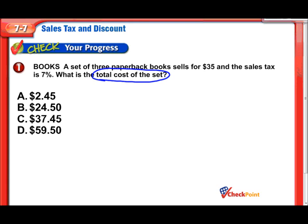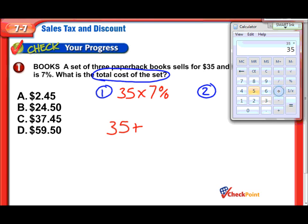There are two ways to go about this. The first one is to take the price and multiply it by that 7%. What we're going to do is add that tax to the original price to figure out the total cost of the set. Let me bring up a calculator. So, we take the $35 and multiply it by the 7%. That's our tax. And we get $2.45.